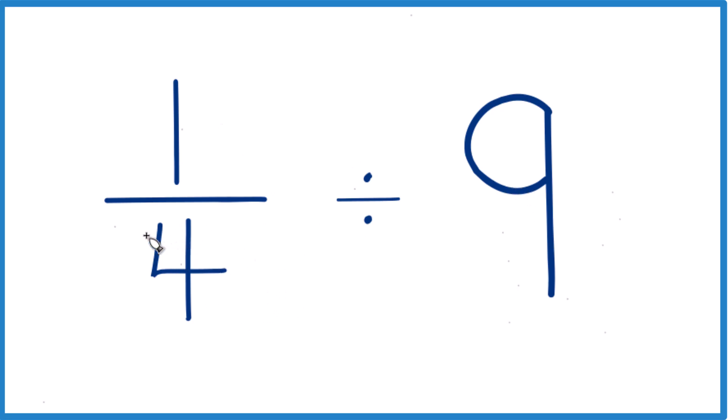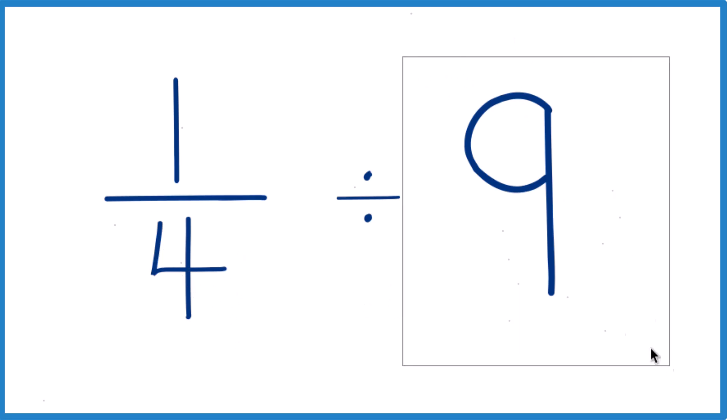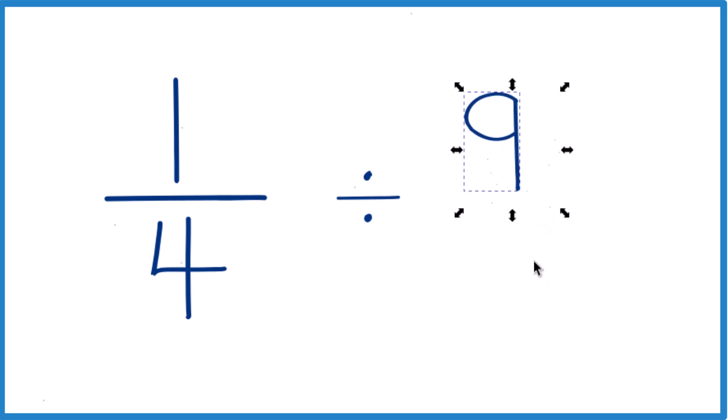So we should end up with another fraction, pretty small number, keep that in mind. For the nine, let's call this nine over one, because nine divided by one is still nine, but now everything lines up kind of nice.